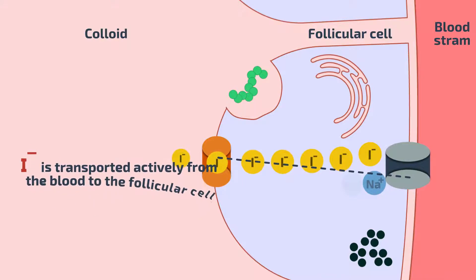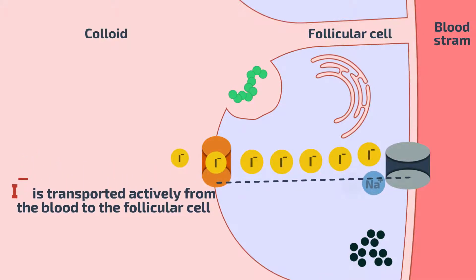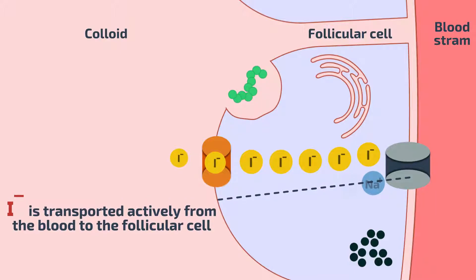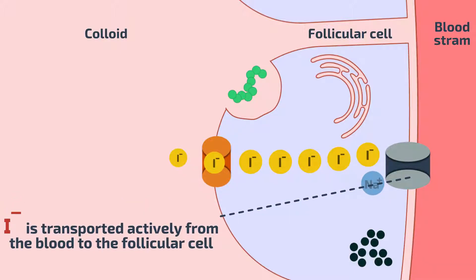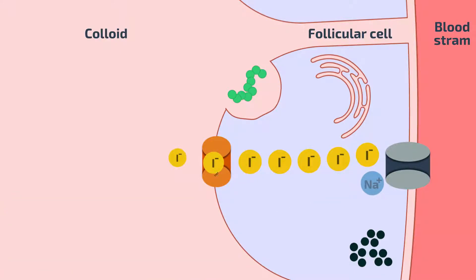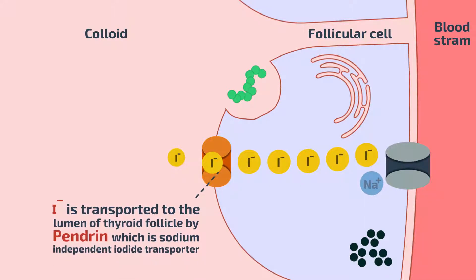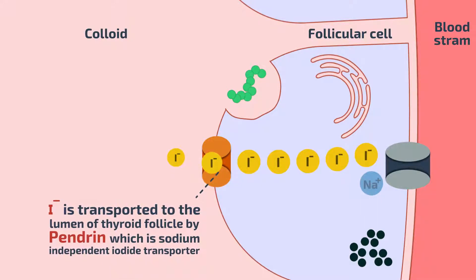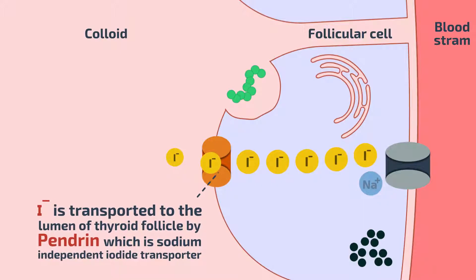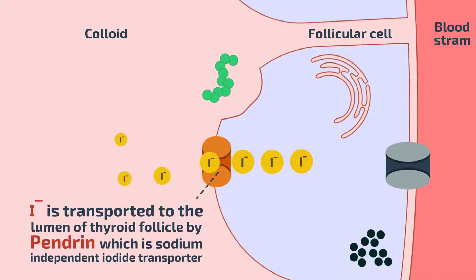Iodide is actively transported from the blood into the cell by a transporter called NIS, Sodium Iodide Symporter. Then iodide is secreted to the colloid by a transporter called Pendrin, which is a sodium-independent transporter.